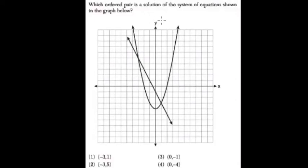Which ordered pairs are a solution of the system of equations below? Remember, solutions can be graphed as intersections. So they're just literally asking you, what are these two points?